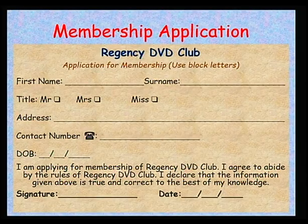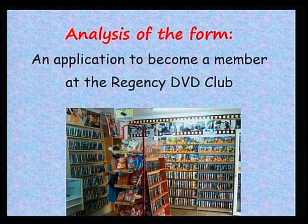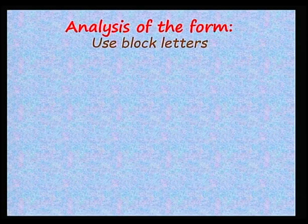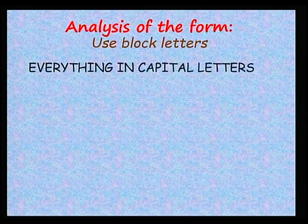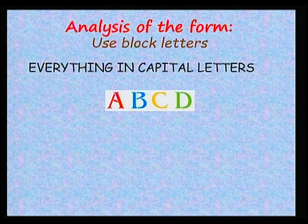Now, observe the following form. Let's go over the form together. What can you deduce from the first two lines? It is an application to become a member of the Regency DVD club. We are told to use block letters. What do you understand by this? We have to use capital letters when we fill the form. But what is the importance of using capital letters? Why can't we use small letters? When people use block letters, they write more clearly and legibly. So, it's easier to read.